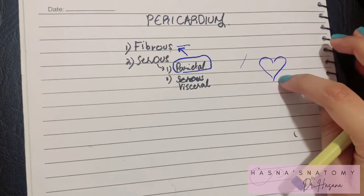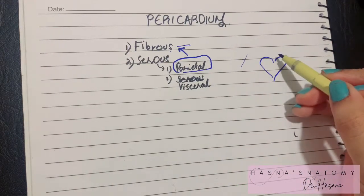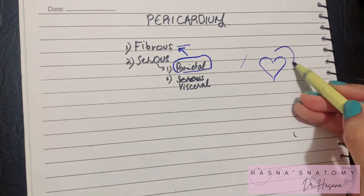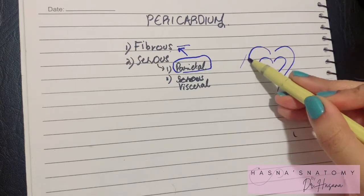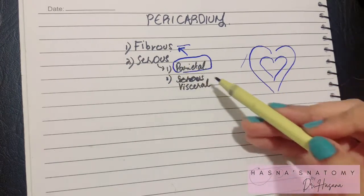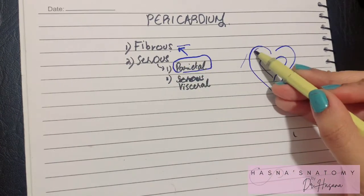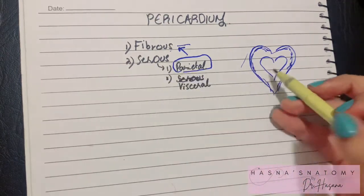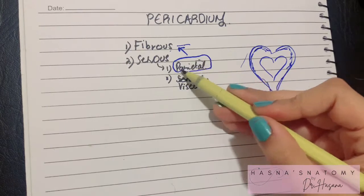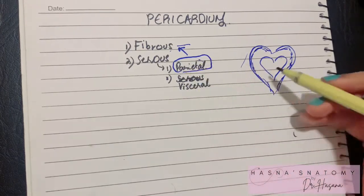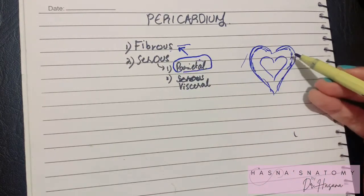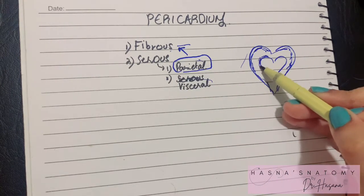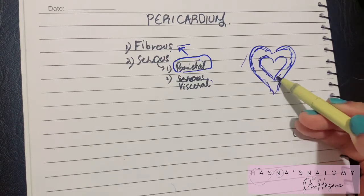For better understanding, the fibrous pericardium is the outer covering of the heart. The serous pericardium's parietal layer is attached to its deep surface. The serous pericardium itself is formed by two layers: the parietal and the visceral. The parietal layer is attached to the deep surface of the fibrous pericardium, while the visceral layer is closely adherent to the heart itself.